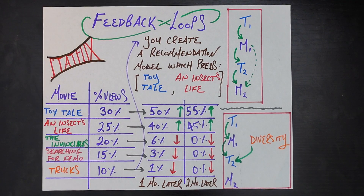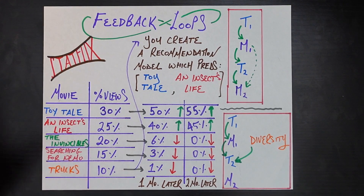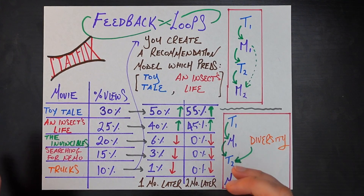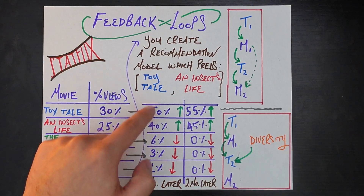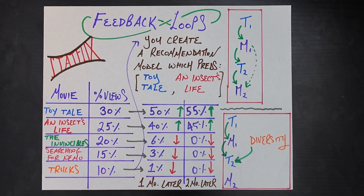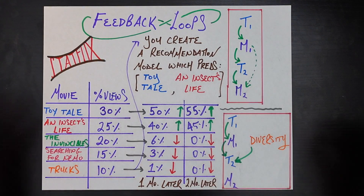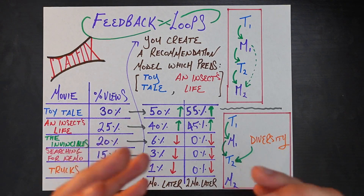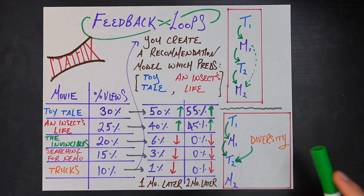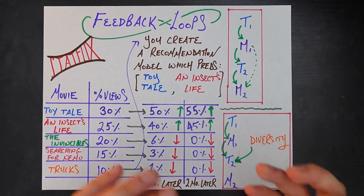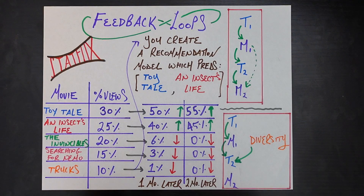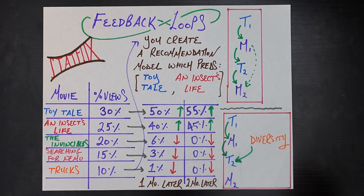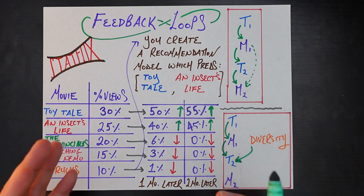For that 5 to 10% of users, we might actually sample a random other movie from our inventory — like The Invincibles, Searching for Nemo, or Trucks. Those things will still have more representation, so those 6%, 3%, and 1% numbers will actually be higher, and therefore contribute more to training the next version of our model. We're intentionally diversifying away from what our model thinks — like a hedge against your model, making sure you're not leaning too far into its predictions in case they're off or induce too strong a selection bias.